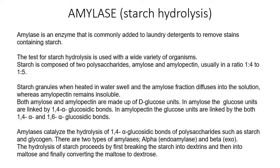The test of starch hydrolysis is used with a wide variety of organisms, as many organisms are able to produce amylase. Now starch is composed of two polysaccharides — amylose and amylopectin — usually in the ratio of 1:4 to 1:5. You need to know about the polysaccharide, the ratio, and the structure.